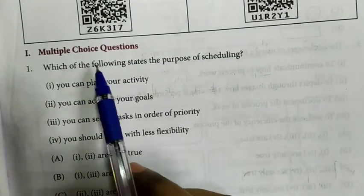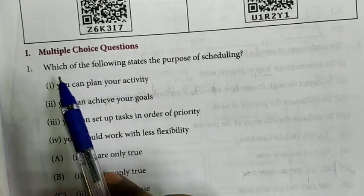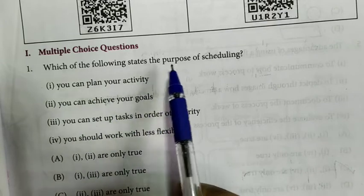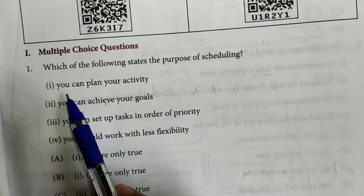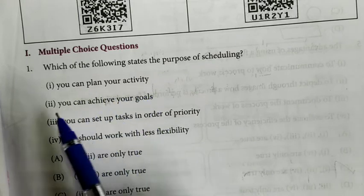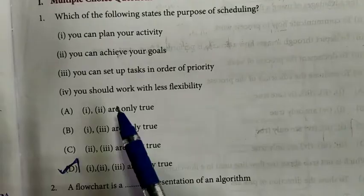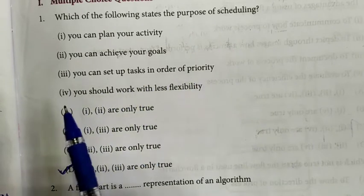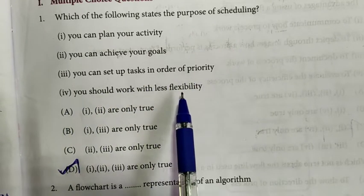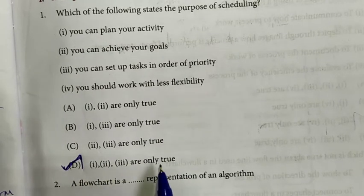First, Multiple Choice Questions. First question: which of the following states the purpose of scheduling? First is you can plan your activities, second is you can achieve your goals, third you can set up tasks in order of priority, fourth you should work with less flexibility. Answer is option D: 1, 2, 3 are only true.